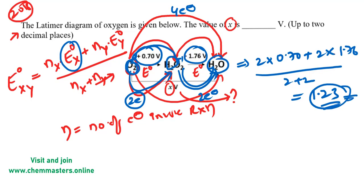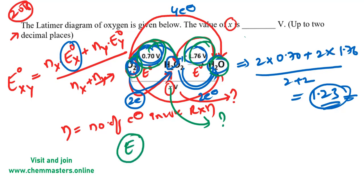Now, why are we not simply taking the sum of the two standard reduction potentials of the two steps to find the total standard reduction potential for the complete conversion of O₂ to H₂O? And why not take the simple average of the standard reduction potentials of the two steps directly? The answer is that E°, the standard reduction potential, is a path-dependent term.